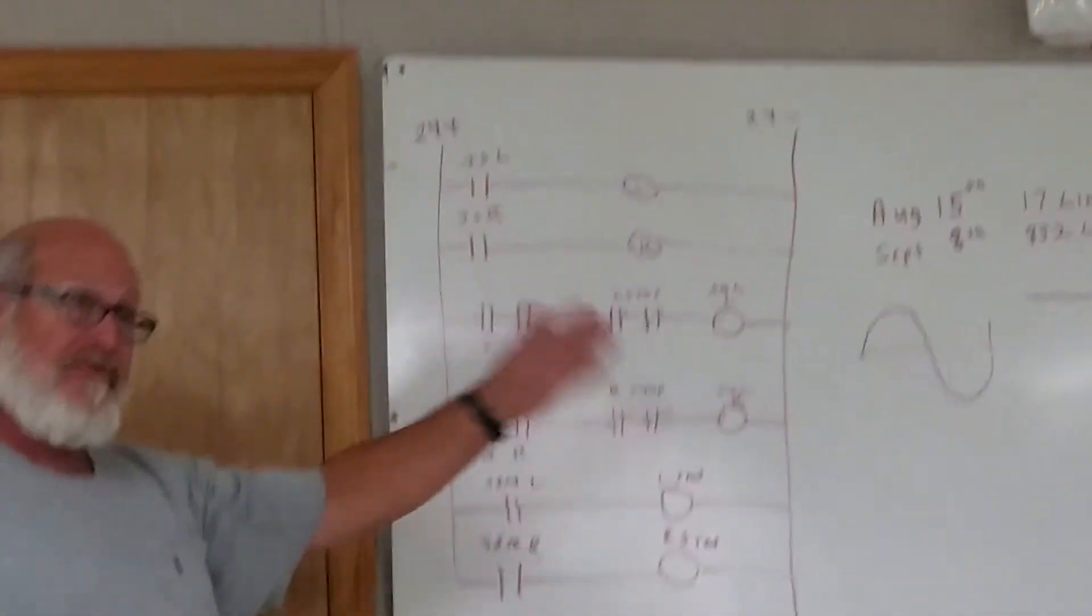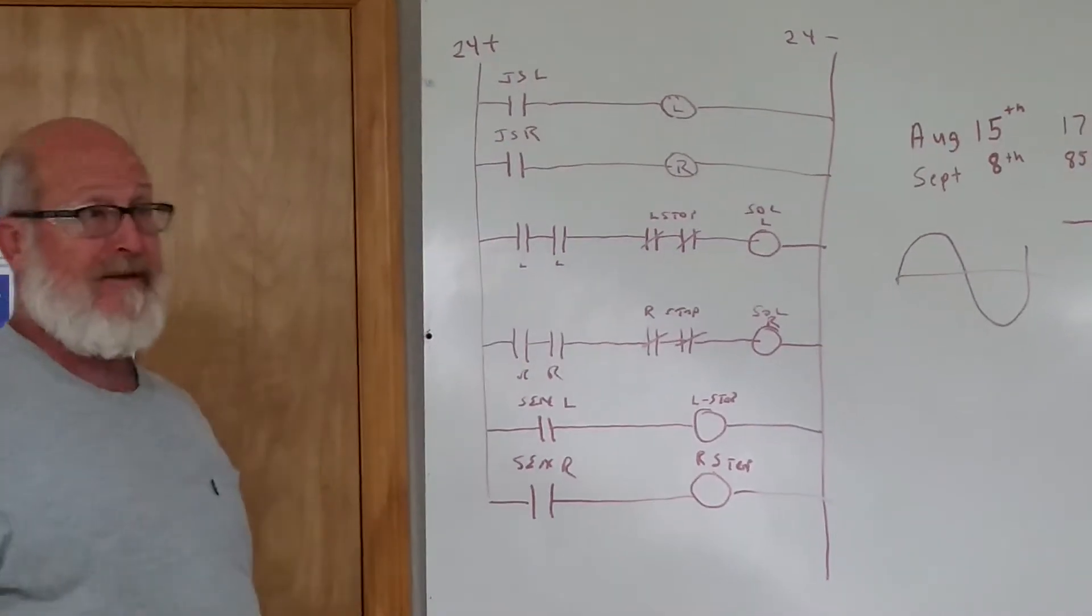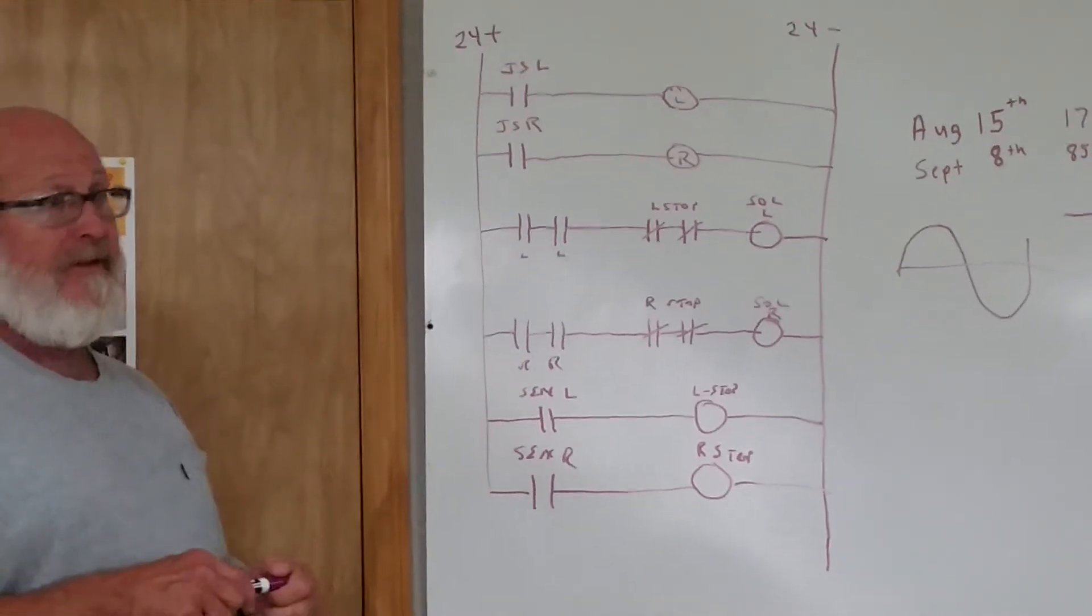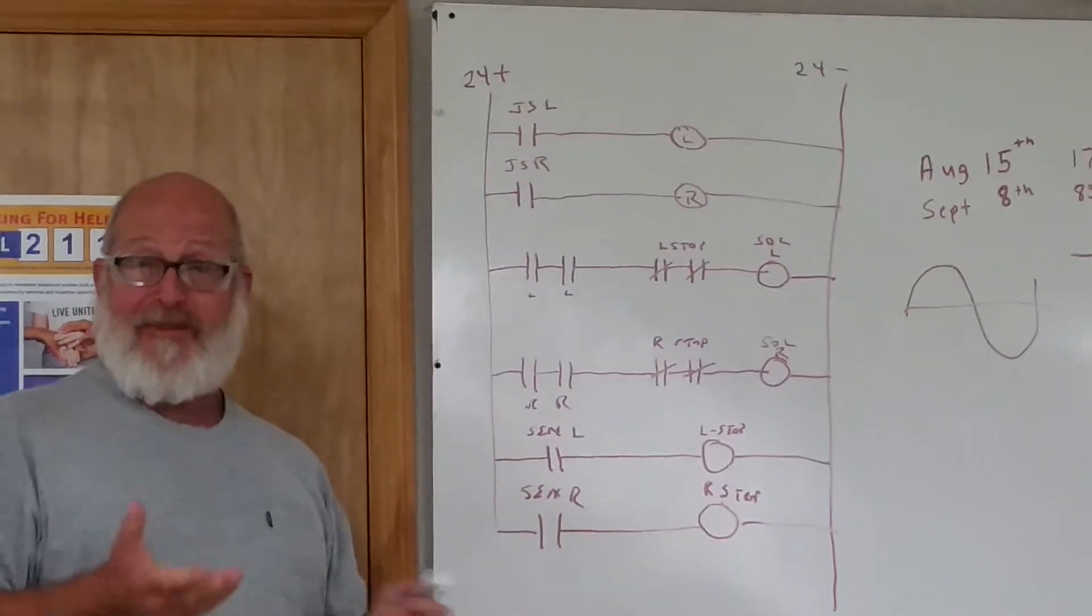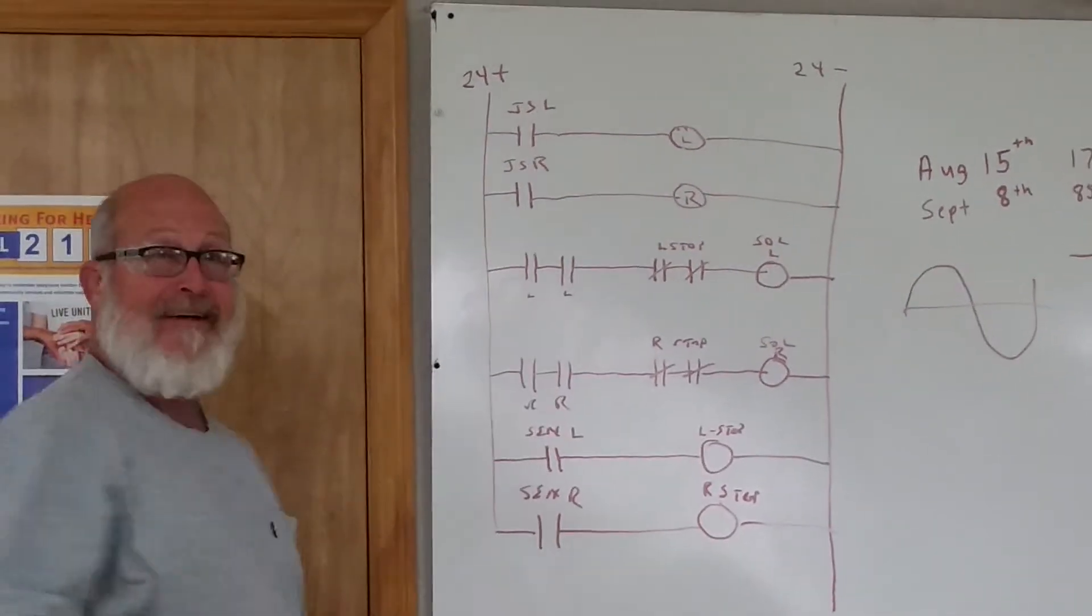And it's the exact same thing for the trap as it is the drift. You just got a different set of relays and stuff. So there's a lot more wire in there than what you think, because it has to do all that.